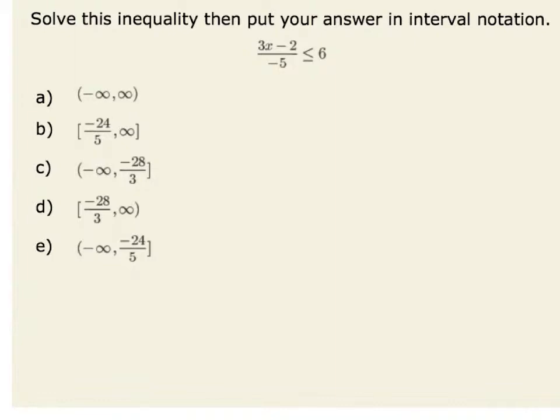In order to solve this inequality, we would have to isolate our variable x on one side of the inequality. This would mean that we must multiply both sides of the inequality by negative 5. Therefore, we're going to have to remember what happens when we multiply or divide both sides of an inequality by a negative number. Let's investigate this a little bit further.